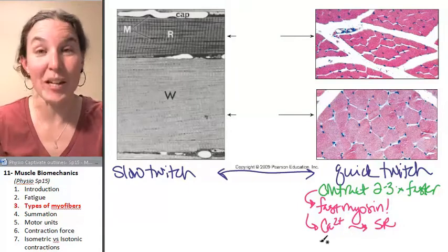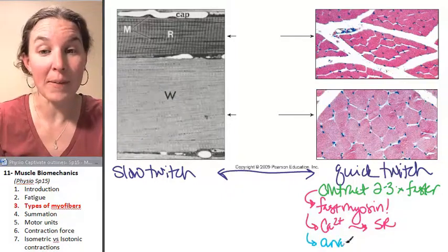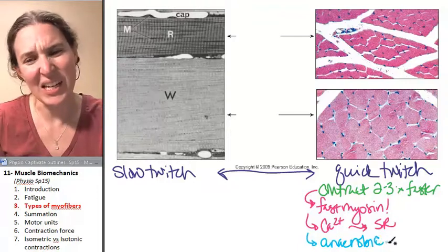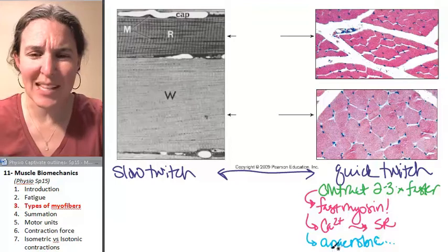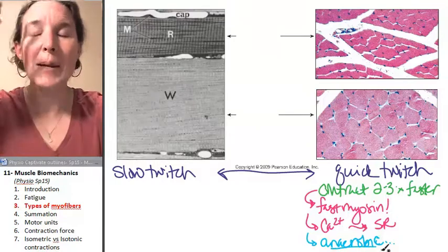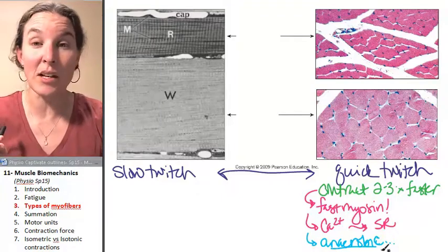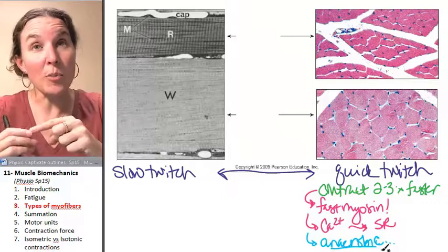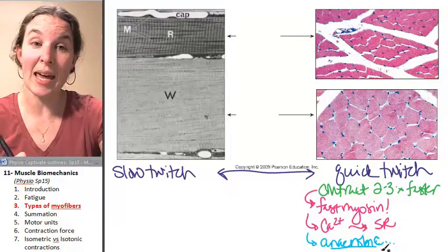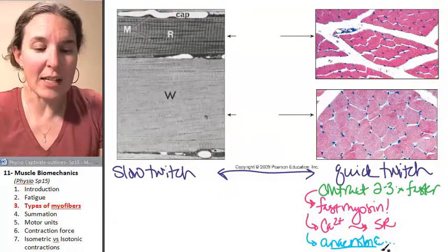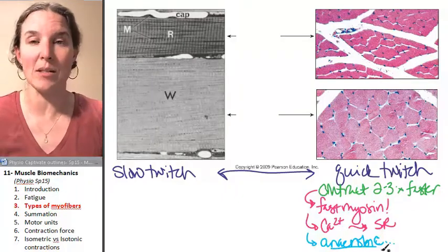Here's another one. Quick twitch fibers are, are you ready for this? Anaerobic, more anaerobic than slow twitch fibers. And what does that mean to you? Well, draw your brain back into the land of general bio when you study the process of cellular respiration. Because cellular respiration, if you remember, there were all those stages. And glycolysis was an oxygen-free breakdown of glucose that resulted in, what, two ATPs or something ridiculous.